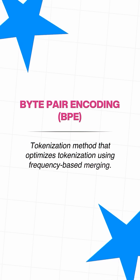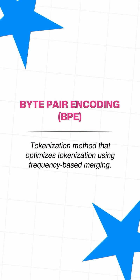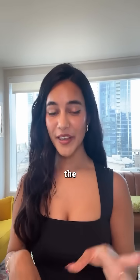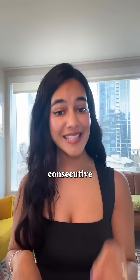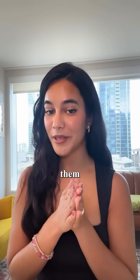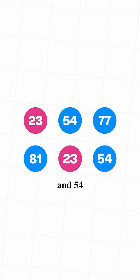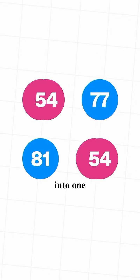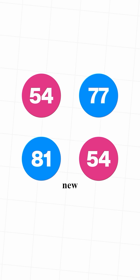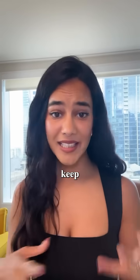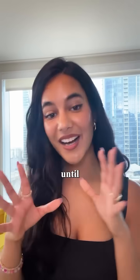BPE is a tokenization method which basically does frequency analysis. We identify the most common consecutive token pairs and merge them together. For example, if tokens 23 and 54 appear together very frequently, we combine them into one, and this new token is given a new unique ID. We basically keep doing this until desired.